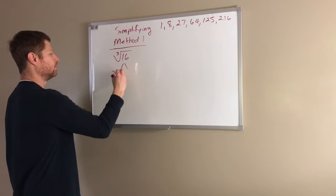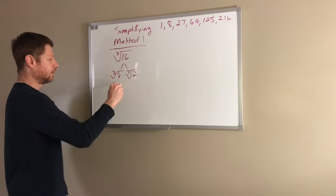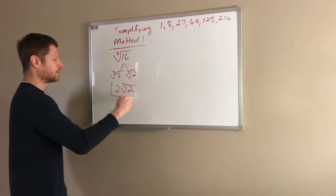Again following our lead from yesterday, cube root of 8 is 2, so we carry that down as outside of the cube root, and then we carry down the leftovers that we have, which is the cube root of 2. So our final answer is 2 cube roots of 2.